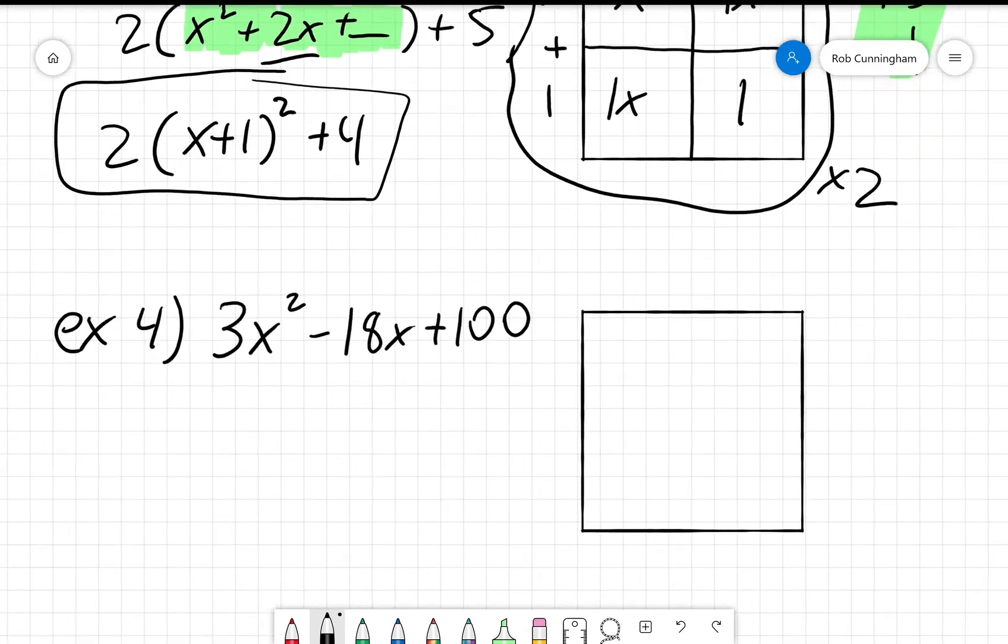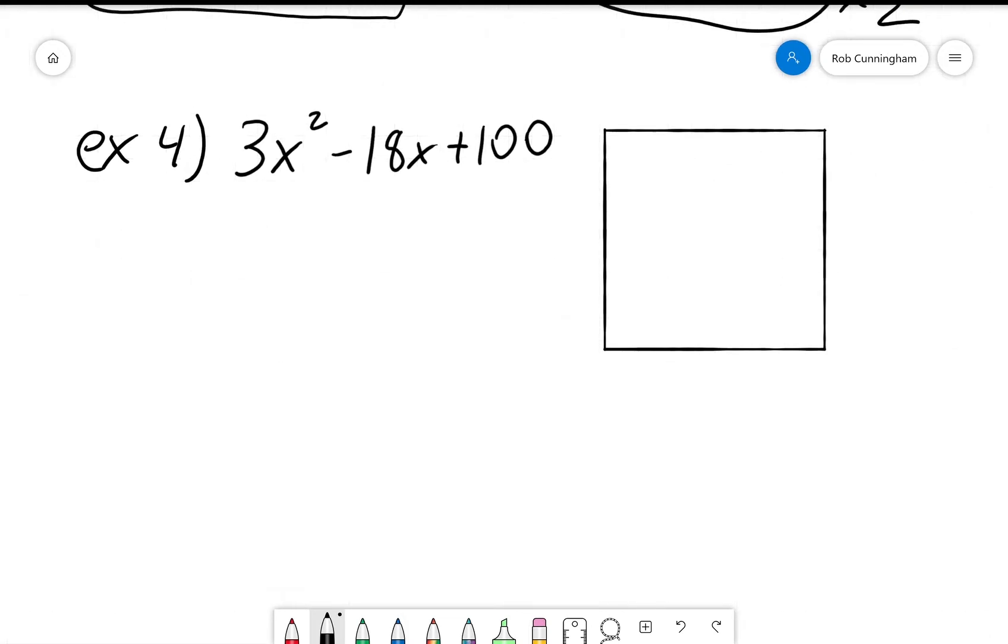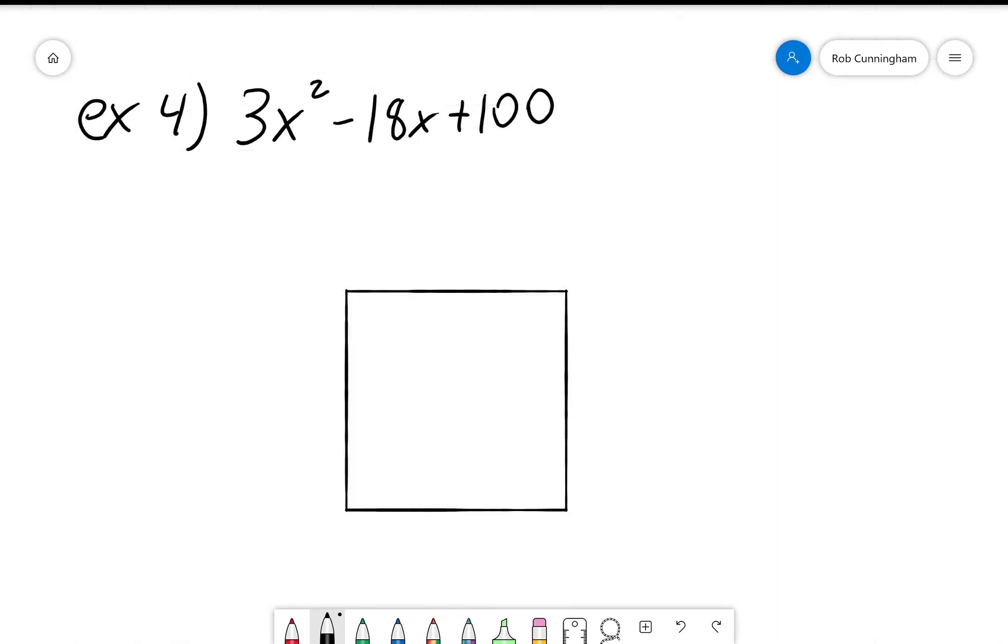One more example, 3x squared minus 18x plus 100. So I'm actually going to give myself a little bit more space on this one to give you a more clear idea of what we're doing. So here's our perfect square, right? Here's the thing that we want to make a square out of.